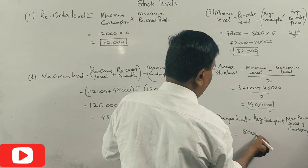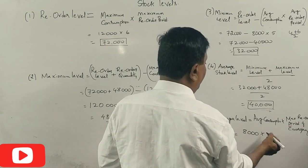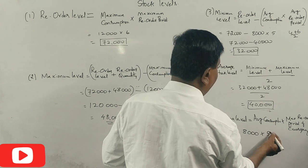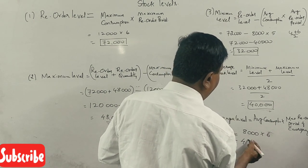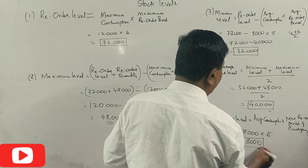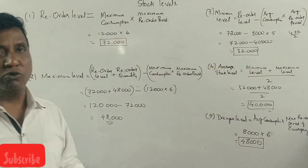8,000 is the maximum reorder period. Danger level involves 48,000 units into 6, 48,000 units into 4,000 units.